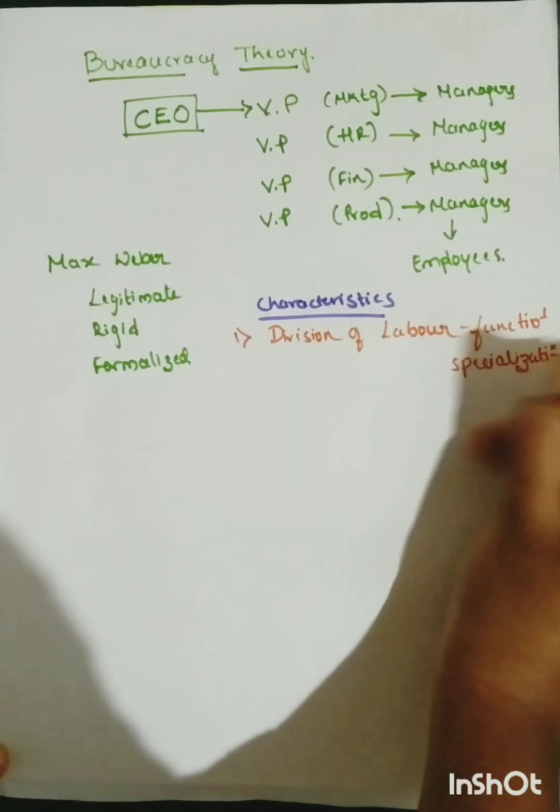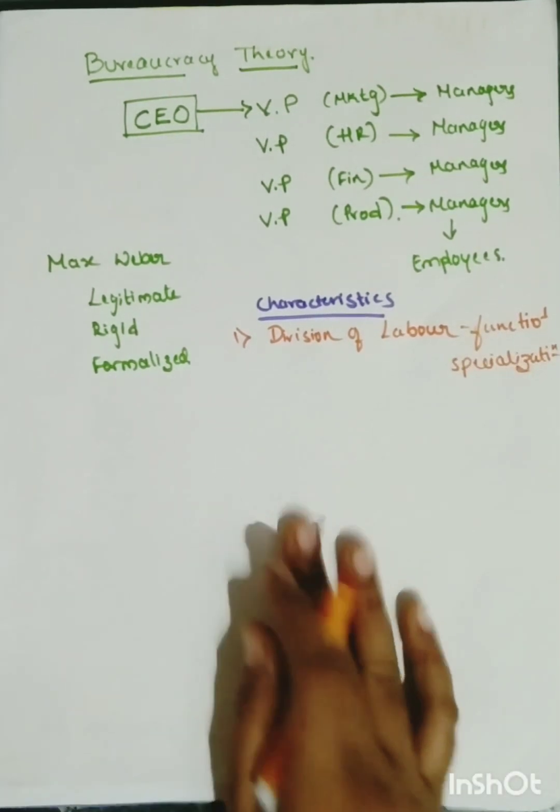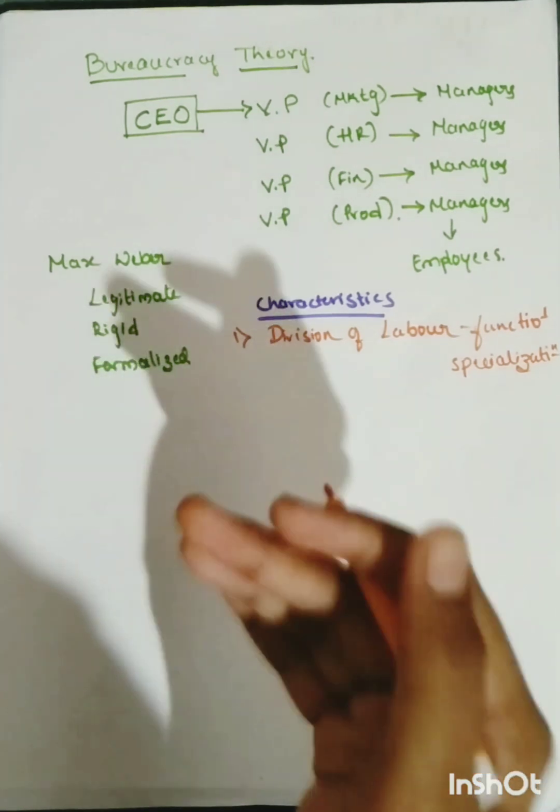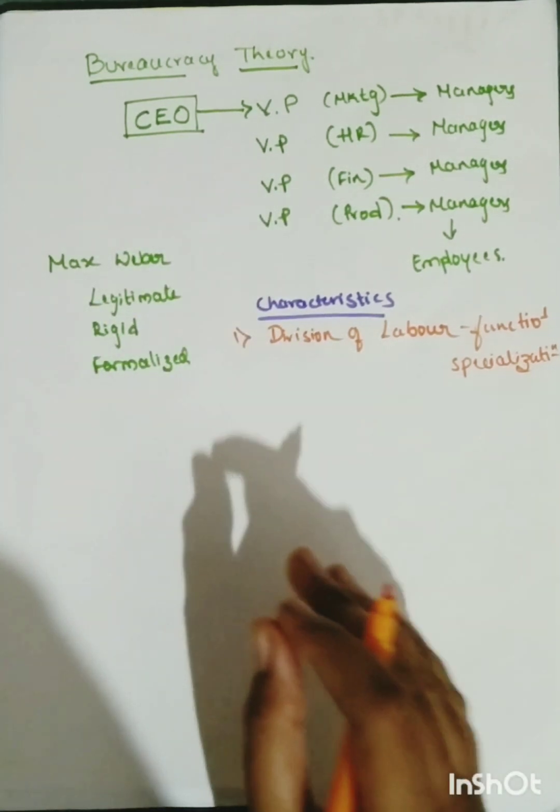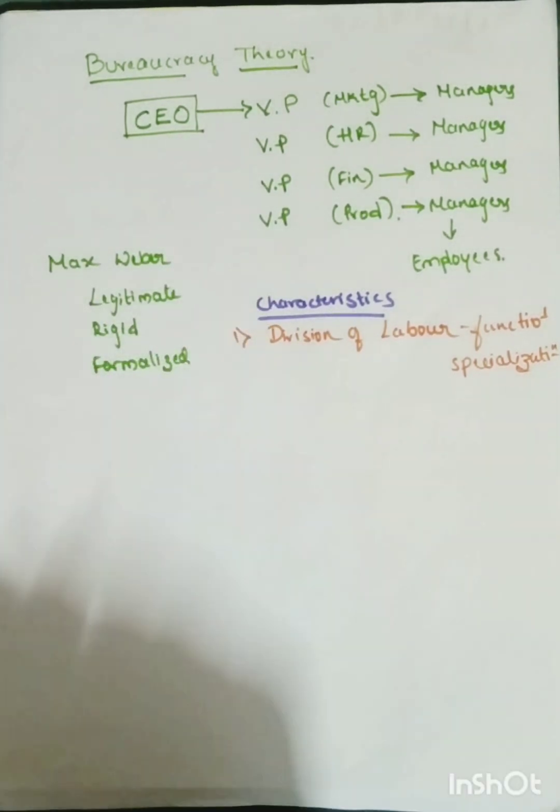This means that in bureaucracy theory or bureaucracy model, within an organization, laborers are divided based on their functional specialization. For example, if two or three employees are interested in the production field and they have the skills and capacity to carry out that work of production well, then those people are aligned in the production department.